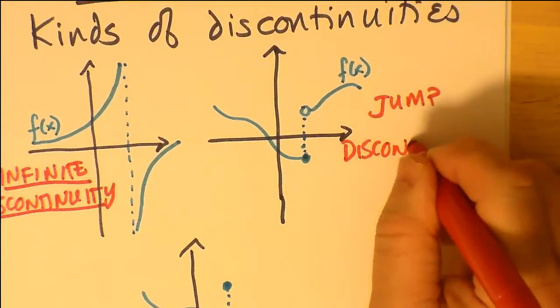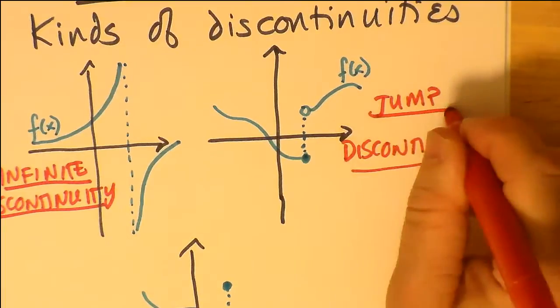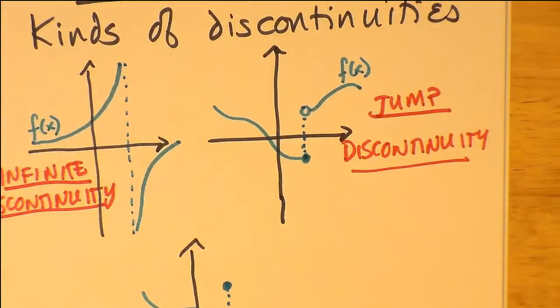There are some major kinds of discontinuities: one called an infinite discontinuity, where there's a vertical asymptote, another called a jump discontinuity,